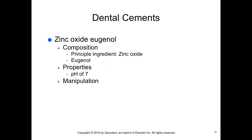Zinc oxide eugenol, commonly referred to as ZOE cement, has been used widely for many years. It is available in powder-to-liquid and paste-to-paste systems and can be used for temporary cementation, temporary and intermediate restorations, high and low-strength bases, and as root canal sealers. The principal ingredient of the powder is zinc oxide, and eugenol is a derivative of oil of cloves — giving it a distinct clove smell, which is often associated with the smell of a dental office. ZOE has a neutral pH of 7, making it friendly to tissue, but it has low strength and high solubility.